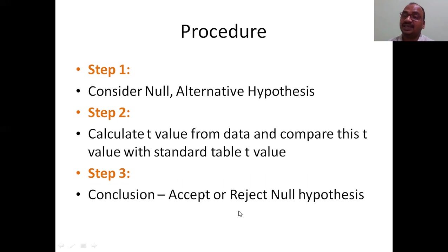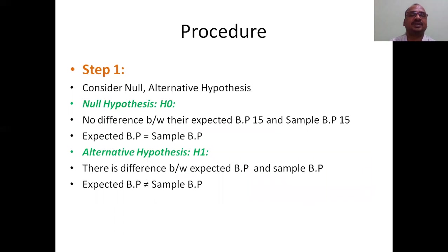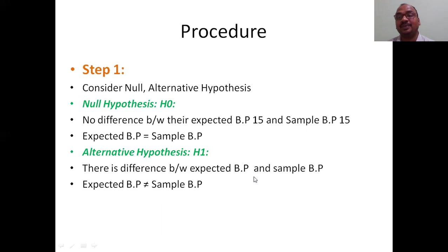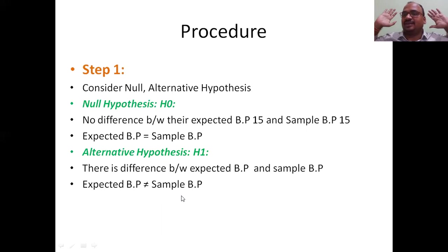Step one: the null hypothesis is that there is no difference between the expected BP of 15 and the sample BP — the average of the sample BP equals 15. The alternative hypothesis is that there is a difference — the expected BP is greater than 15 and is not equal to the sample BP.